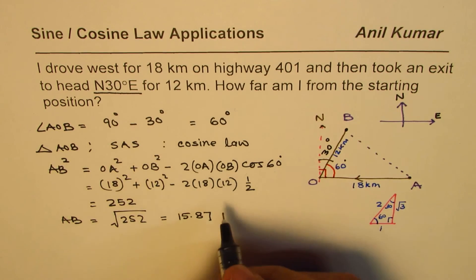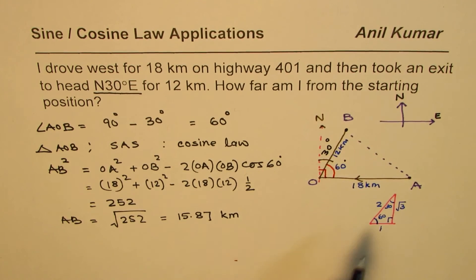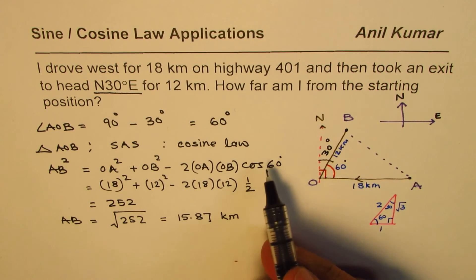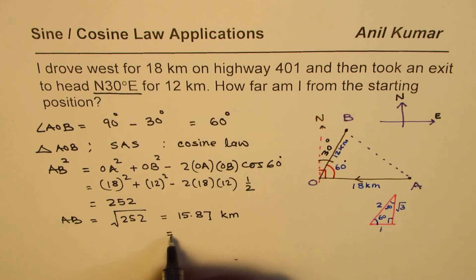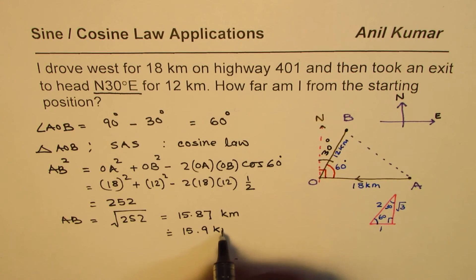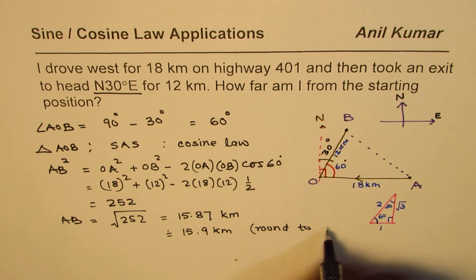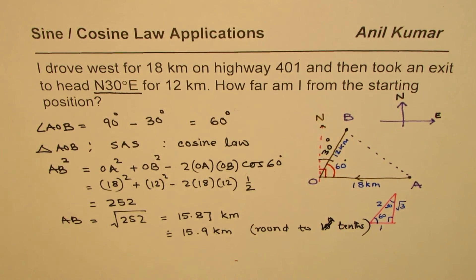Units will be units of the other sides which is kilometers. Now at times you may be given that round your answer to two decimal place or one decimal place. If the answer is to be rounded to tenths, then we could write this as 15.9 kilometers. This is rounded to tenths.